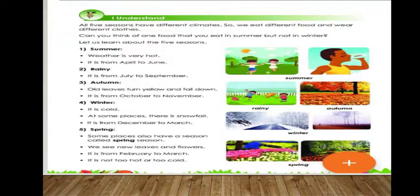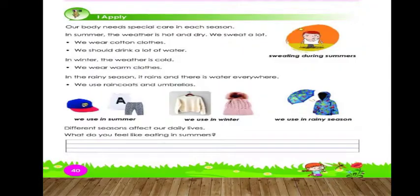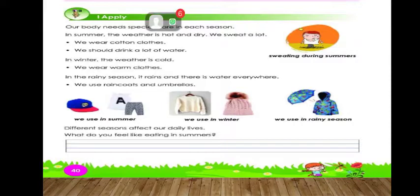So there are five seasons: summer, rainy, autumn, winter, and spring. Our body needs special care in each season. In summer the weather is hot and dry — we sweat a lot, we wear cotton clothes, and we should drink a lot of water to keep ourselves hydrated.